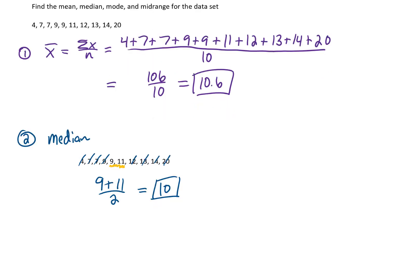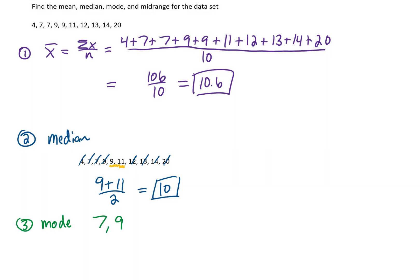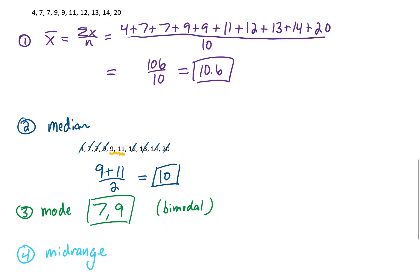Next, we can find the mode — the most frequently occurring data value. In this case, 7 appears twice and 9 appears twice in our set, so we have two modes: a mode of 7 and a mode of 9. This set is bimodal. Finally, the midrange is the smallest plus the largest value divided by 2, giving 24 over 2, which is 12.